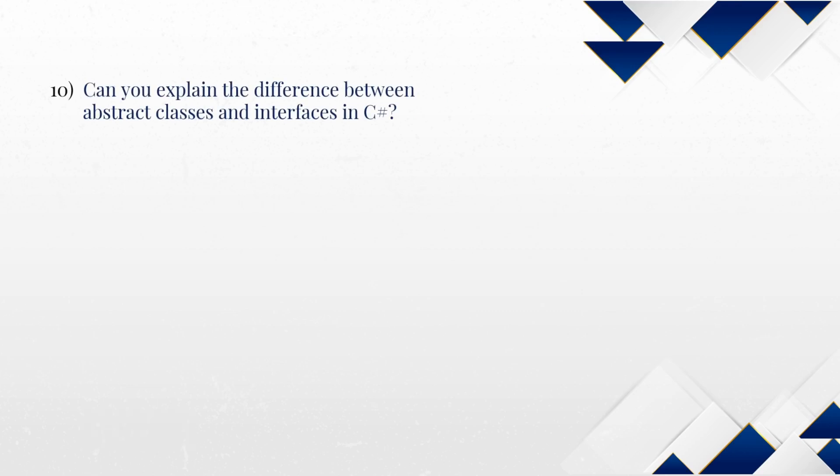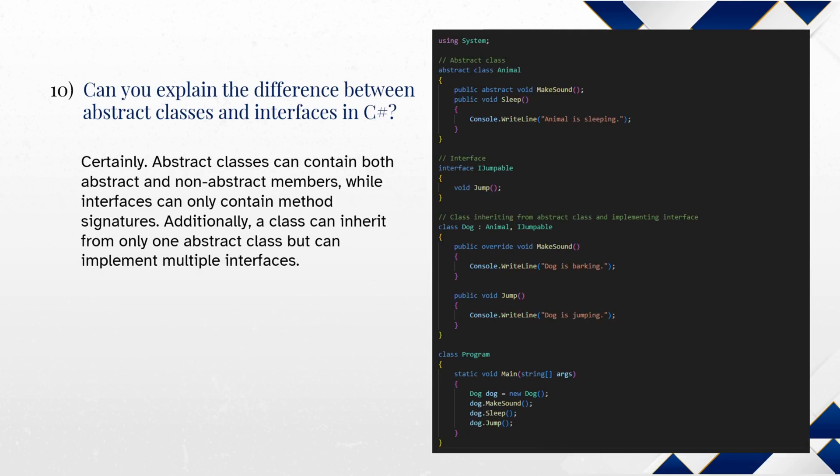Can you explain the difference between abstract classes and interfaces in C-Sharp? Certainly. Abstract classes can contain both abstract and non-abstract members, while interfaces can only contain method signatures. Additionally, a class can inherit from only one abstract class, but can implement multiple interfaces.